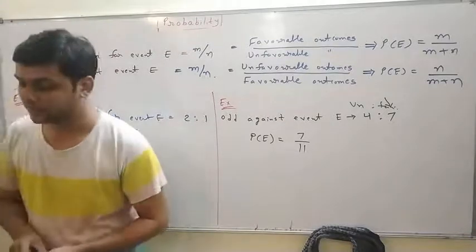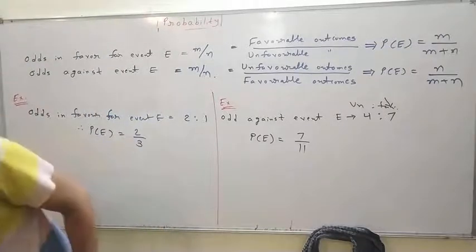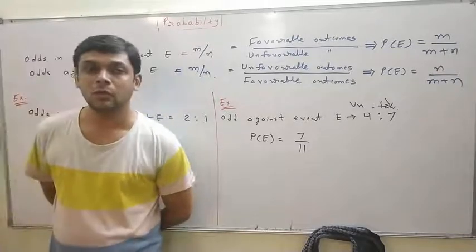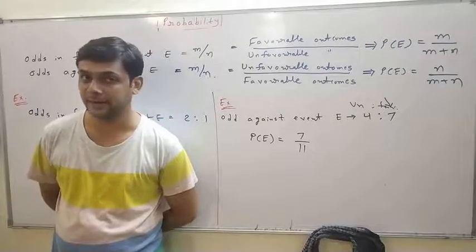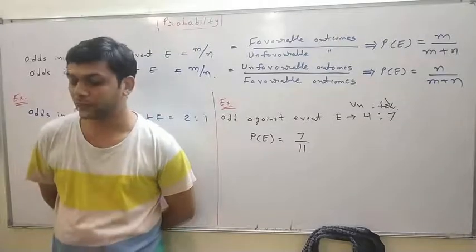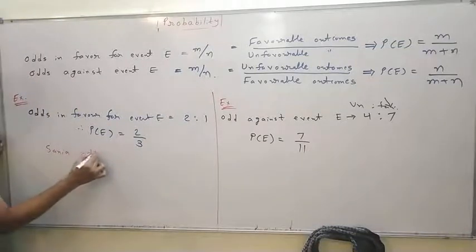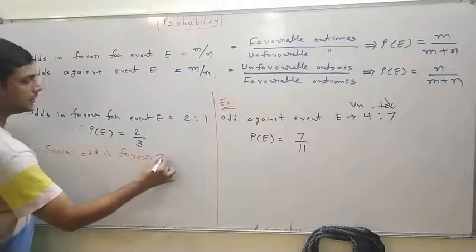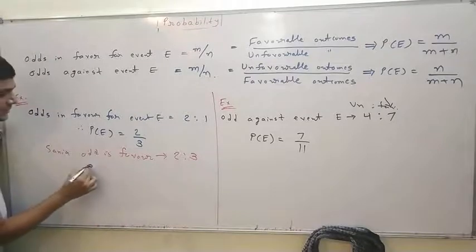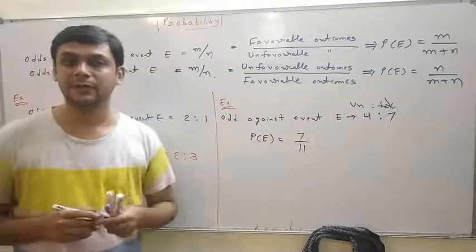The odds in favor of Sanya over Martina is 2 to 3. Find whether the best 2 out of 3 or the best 3 out of 5 gives more chance for Sanya to win the series. Since odds in favor are 2 to 3, P(Sanya wins) equals 2 by 5. We need to compare the probability of Sanya winning the series in best of 3 versus best of 5.